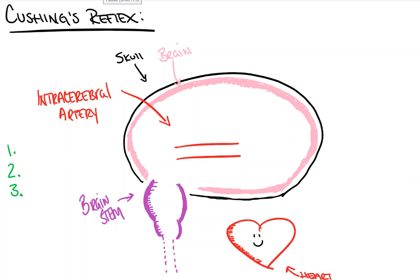Hi everyone. In this video from Count Backwards from 10, we're going to take a look at Cushing's reflex, or Cushing's triad as it's sometimes known. This is something that will come up especially in the ICU and trauma base — patients who have sustained head traumas, large intracranial bleeds, or sometimes very large tumors that produce mass effect. If we simply understand the physiology, everything falls into place very quickly and it's very easily recognizable.